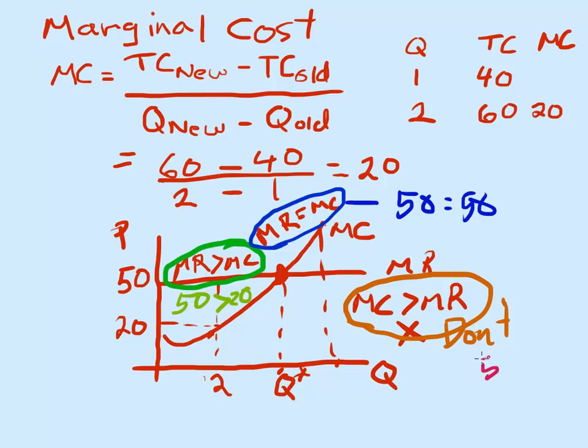marginal revenue of 50, marginal cost maybe 60. So on that additional unit I made $50 on it - my marginal revenue - but I had to spend $60 to do that. I lost $10 on that unit. Don't do it.